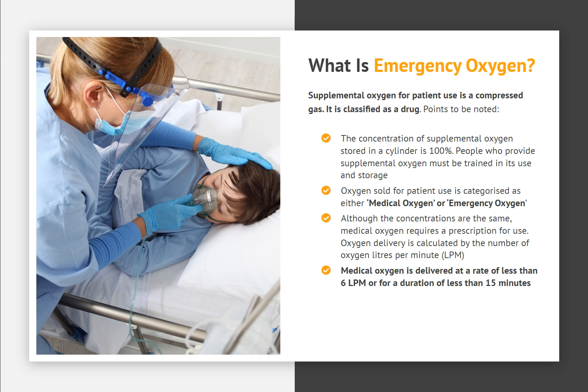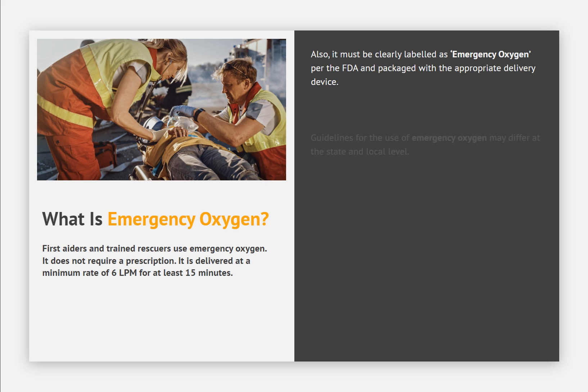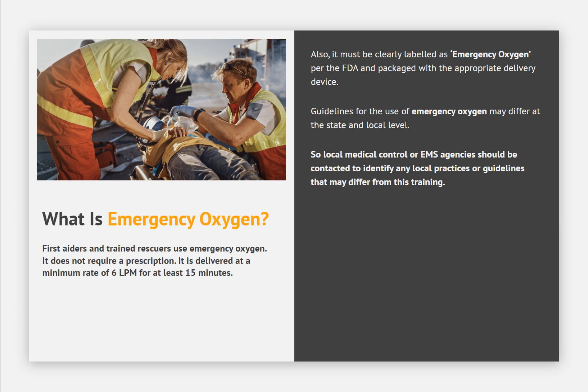Supplemental oxygen for patient use is a compressed gas and is classified as a drug. The concentration of supplemental oxygen stored in a cylinder is 100%. People who provide supplemental oxygen must be trained in its use and storage. Oxygen sold for patient use is categorized as either medical oxygen or emergency oxygen. Although the concentrations are the same, medical oxygen requires a prescription for use. Oxygen delivery is calculated by the number of liters per minute. Medical oxygen is delivered at a rate of less than 6 LPM, or for a duration of less than 15 minutes. First aiders and trained rescuers use emergency oxygen, which does not require a prescription. It is delivered at a minimum rate of 6 LPM for at least 15 minutes.